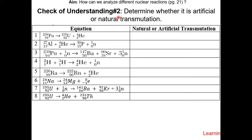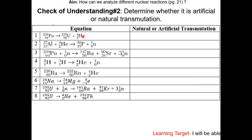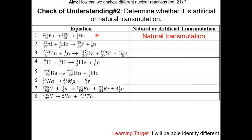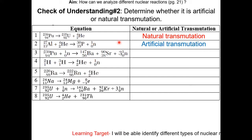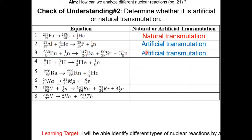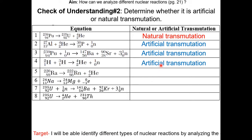Check of understanding number two: determine whether each is an artificial or natural transmutation. The first one has one reactant, therefore it is natural. The second one has two reactants, therefore it is artificial. The third one has two, so it's artificial. The fourth one also has two, so it's artificial.